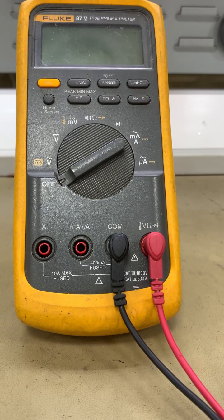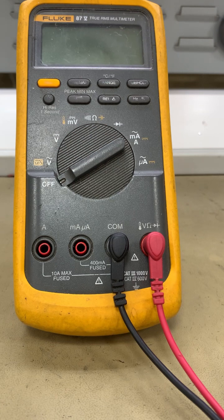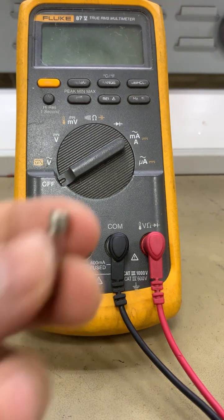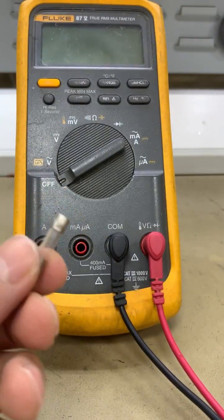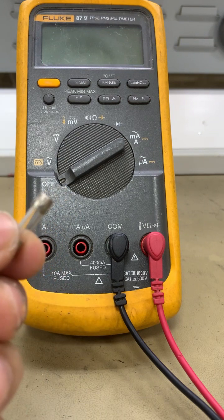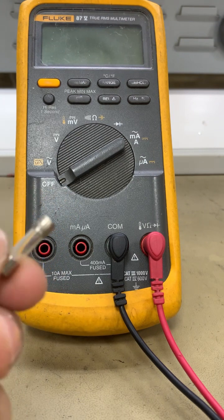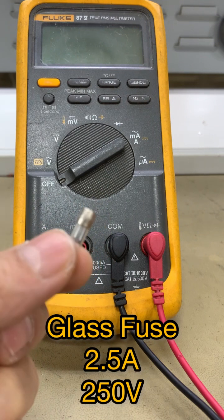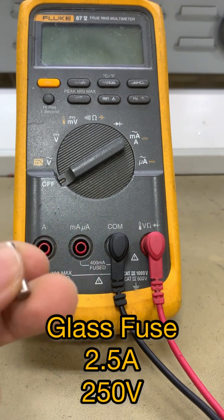In this video, I'll show how to test a fuse using a digital multimeter. We have here a sample of a fuse. This is a small glass fuse which is a 2-pin, 5 ampere, 250 volts. Okay, let's start.